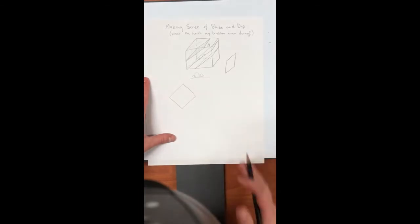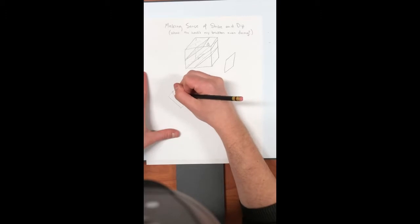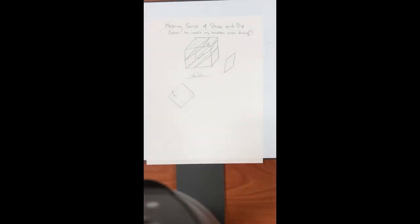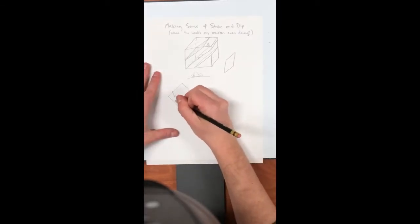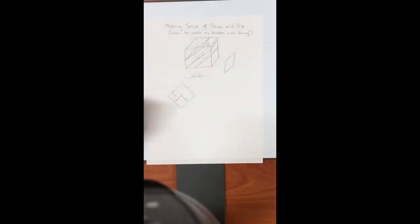We can describe planes by knowing one vector that's perpendicular to the plane. Or we can describe them with two vectors that are in the plane, right? If we know any two vectors in the plane, we can describe the plane.